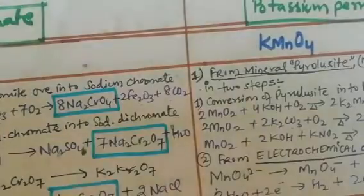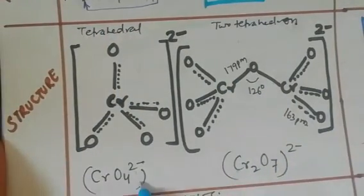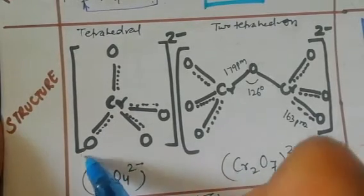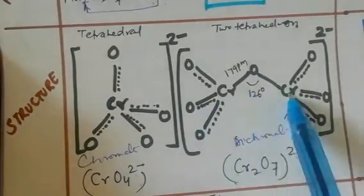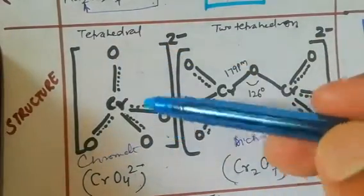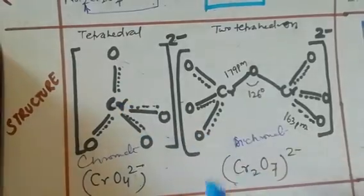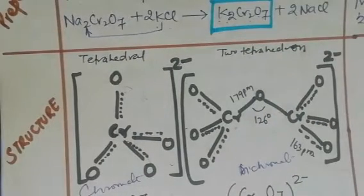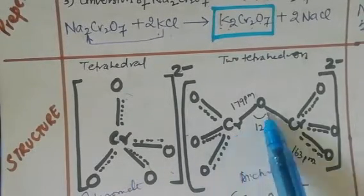Next we discuss structure, which is very important. Both chromate and dichromate ions have tetrahedral structure. In chromate, there is one chromium atom bonded to four oxygen atoms in a tetrahedral arrangement. In dichromate, there are two chromium atoms, so it consists of two tetrahedra sharing one corner, with a chromium-oxygen-chromium bond angle of 126 degrees.